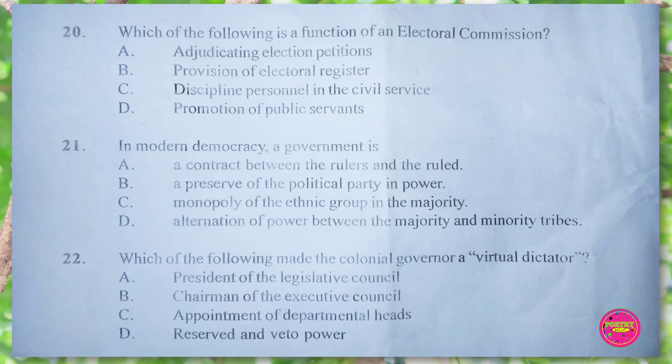Question 20. Which of the following is a function of an electoral commission? A. adjudicating election petitions, B. provision of electoral register, C. discipline personnel in the civil service, D. promotion of public servants. The correct answer is B. provision of electoral register.